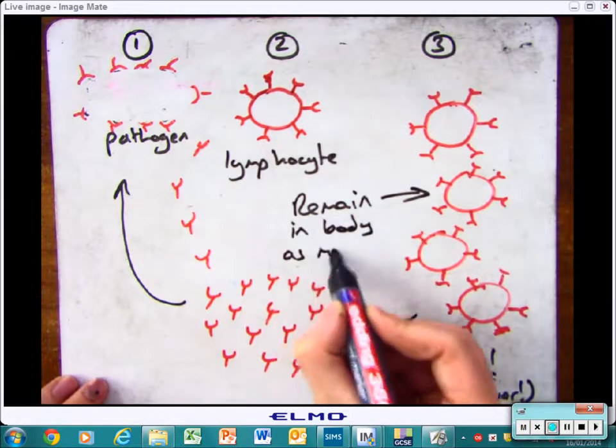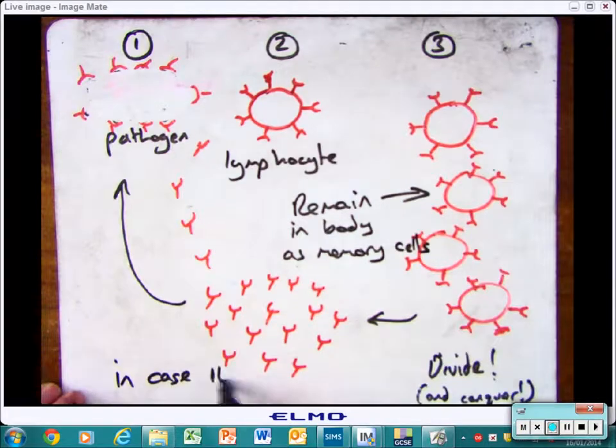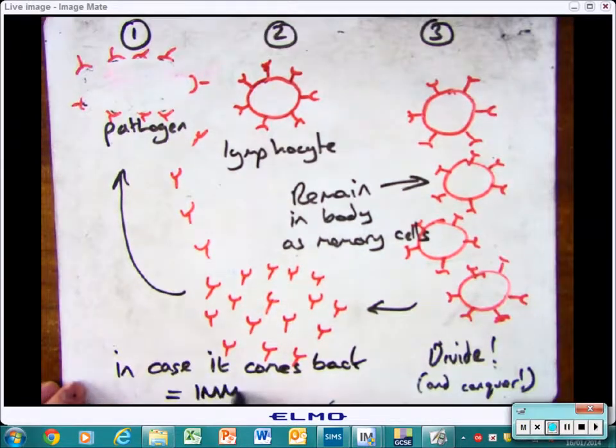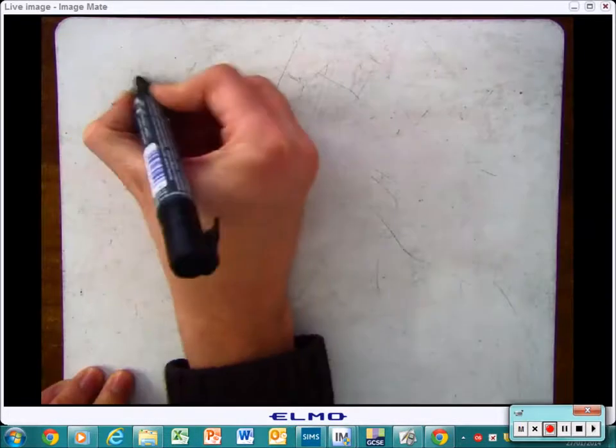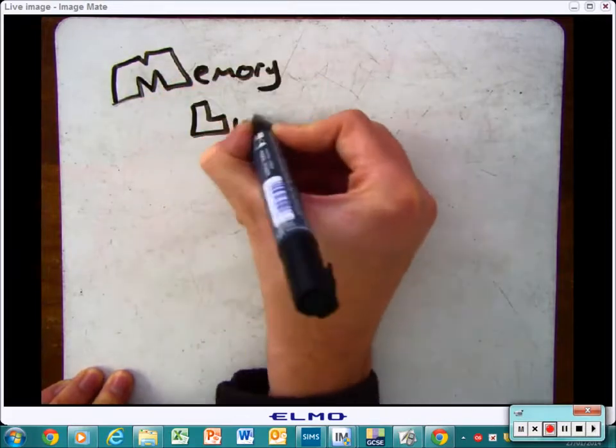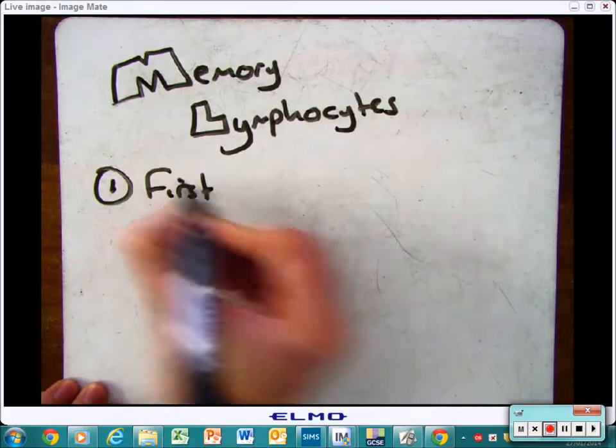Then what happens is some of these cells will remain as memory cells in case it comes back. As soon as that happens, you become immune. These cells are called memory lymphocytes.